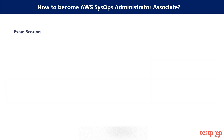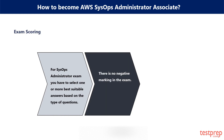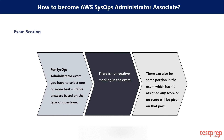Exam Scoring. First, for the SysOps Administrator Exam, you have to select one or more best suitable answers based on the type of questions. Second, there is no negative marking in the exam. Third, there can also be some portion in the exam which hasn't been assigned any score, meaning no score will be given on that part.